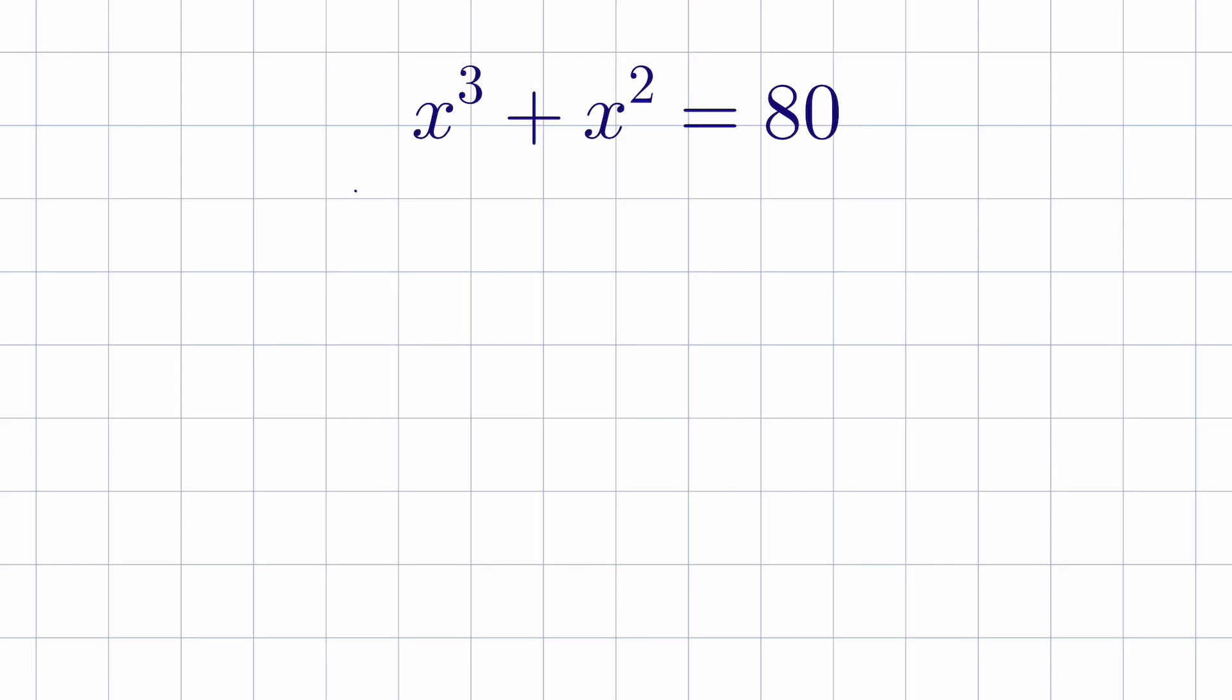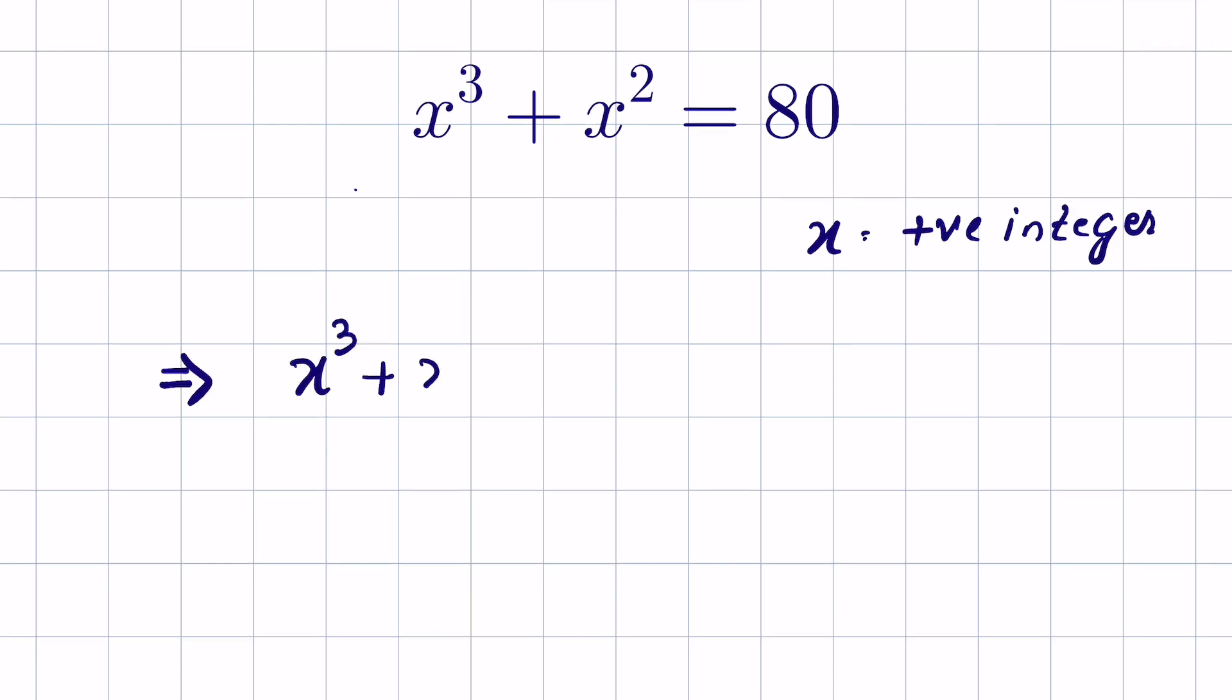x³ + x² = 80. Find the value of x where x is a positive integer. Let's send 80 to the left hand side, so it will be x³ + x² - 80 = 0.